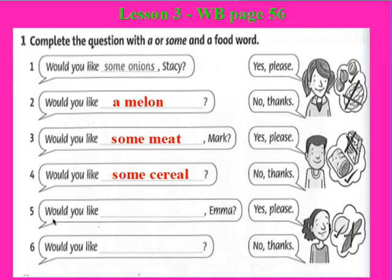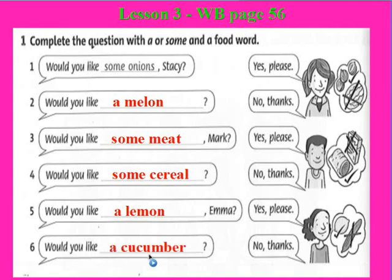Number five: Emma. Would you like a lemon, Emma? This is a picture of a lemon. Yes, please. Would you like a lemon, Emma? Yes, please. Would you like a cucumber? No, thanks. Do you understand the lesson? Now correct your answers in your workbook.